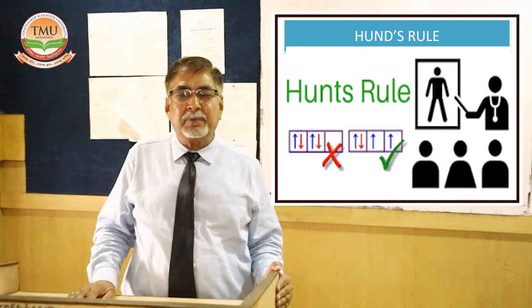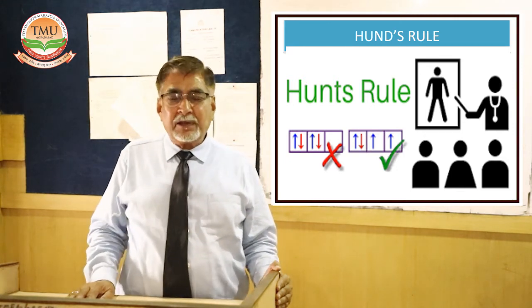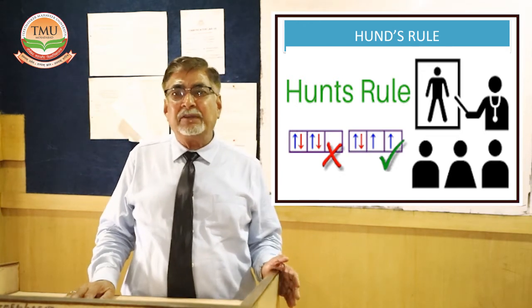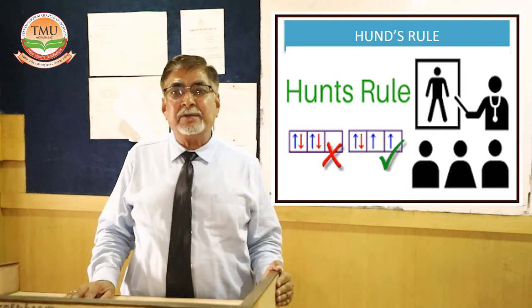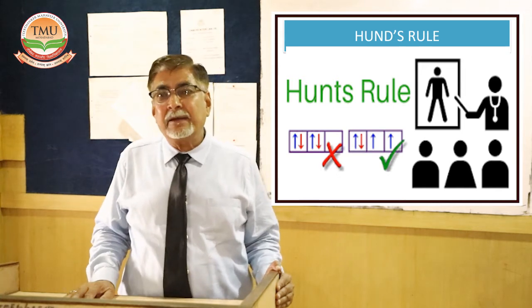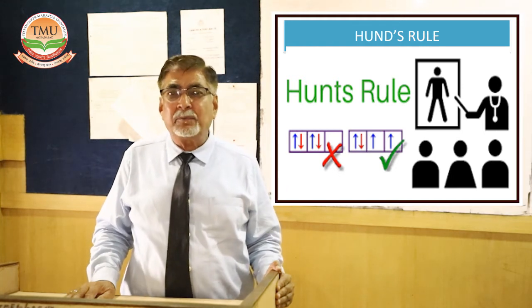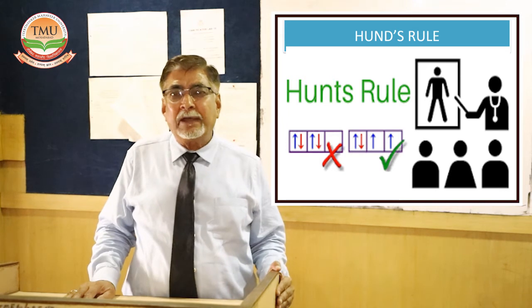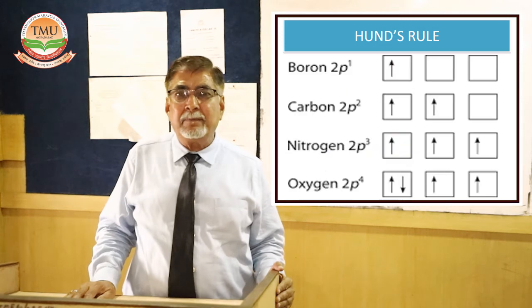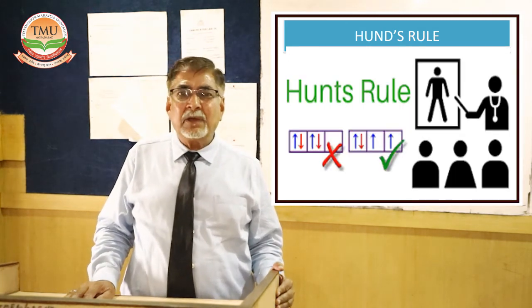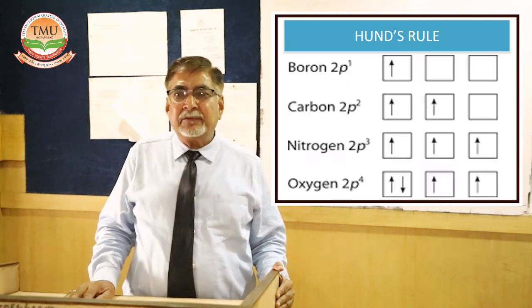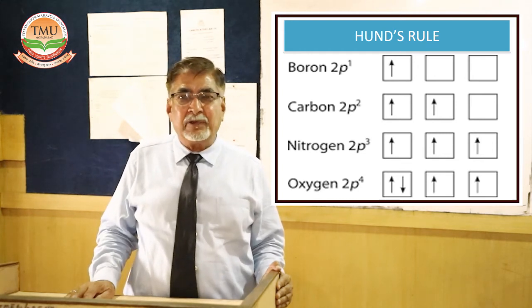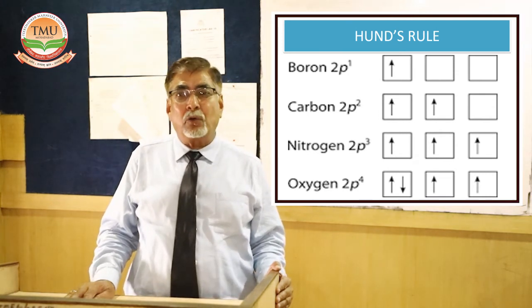The second group includes beryllium, magnesium, calcium, strontium, barium, and radium. Beryllium (atomic number 4) is written as 1s² 2s². Magnesium (atomic number 12) is 1s² 2s² 2p⁶ 3s². S can accommodate a maximum of 2 electrons, P a maximum of 6, D a maximum of 10, and F a maximum of 14. Every second-group element shows an outermost s² configuration, confirming their group membership.